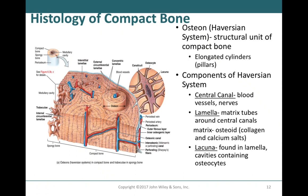Osteocytes are found in little spaces between the lamellae known as lacunae — the little space the osteoblast left for itself when secreting bone matrix before becoming an osteocyte. Osteocytes have long slender projections that sit in the lacuna with lamellae on either side. Little canals called canaliculi link the different lacunae containing osteocytes, allowing the projections of one osteocyte to reach out to other bone cells. This network allows osteocytes to link up and monitor bone homeostasis.